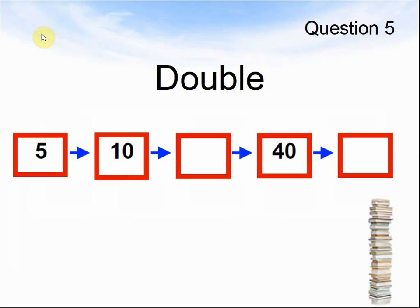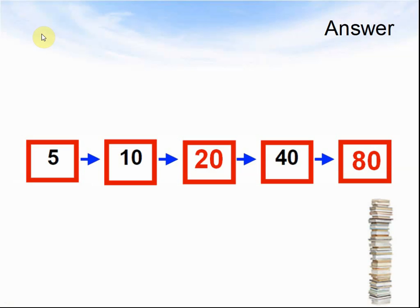Question 5. This time we're going to look at doubling. 5 doubled makes 10. 10 doubled makes something. Something doubled makes 40. And 40 doubled makes the next number. Pause the video to answer the question. The answers: 5 doubled makes 10, 10 doubles makes 20, 20 doubles makes 40, 40 doubles makes 80.